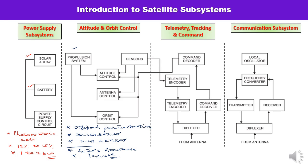The next subsystem is telemetry, tracking and command — TT&C. This subsystem has three terms: telemetry, tracking, and command. The function of telemetry is to receive data — various sensors placed on the body of the satellite collect data, and the telemetry system sends this data to the controlling earth station. The data may be in the form of pressure in the fuel tank, temperature of the subsystems, or voltage and current in the power conditioning unit.